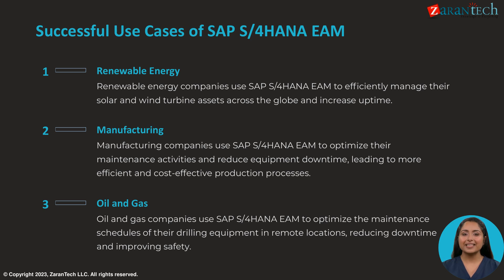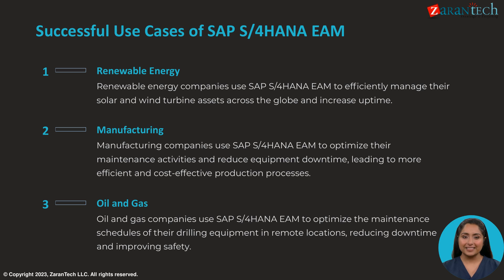SAP S/4HANA EAM has delivered value across industries, including renewable energy firms that manage wind and solar assets across widespread locations, manufacturers who want to optimize production equipment uptime, and oil and gas companies maintaining remote drilling platforms and rigs. The key is managing geographically dispersed assets efficiently and proactively.